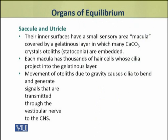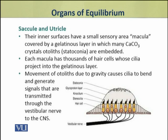The inner surfaces of the saccule and utricle have a sensory area which is called the macula. This macula is covered by a gelatinous layer, which contains many small crystals of calcium carbonate called otoliths or statoconia, which are embedded within it. This pattern is the same as in a statocyst — it is the more advanced organ.